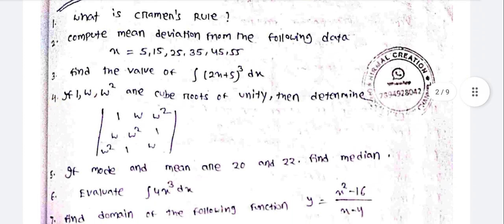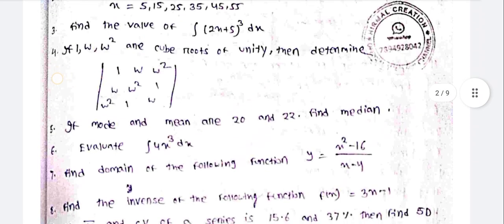If 1, omega, omega squared are cube roots of unity, then determine the determinant: first row 1, omega, omega squared; second row omega, omega squared, 1; third row omega squared, 1, omega.